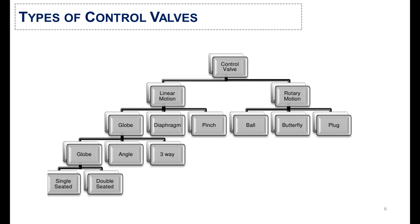Here are the main types of control valves. Control valves are defined in two ways by motion: one is linear motion and the second is rotary motion. In linear motion, valves are further divided into globe, diaphragm, and pinch valves. The globe valve is further divided into five categories: angle, three-way, single seated, double seated, and simple globe valve. Rotary motion valves are divided into three main types: ball valve, butterfly valve, and plug valve.